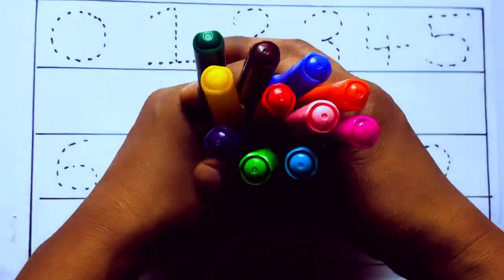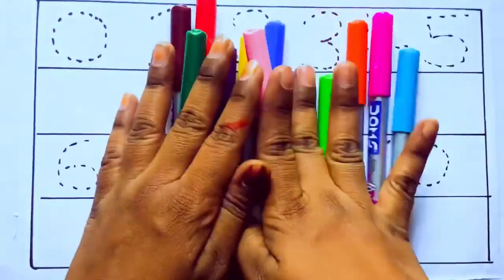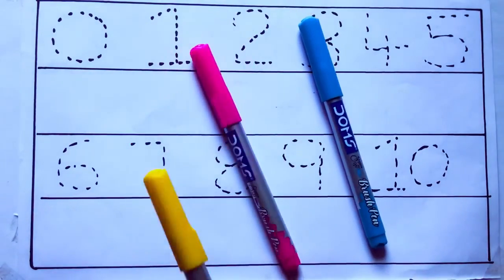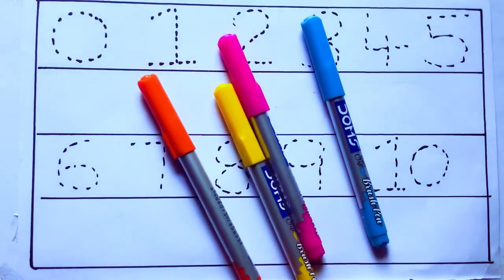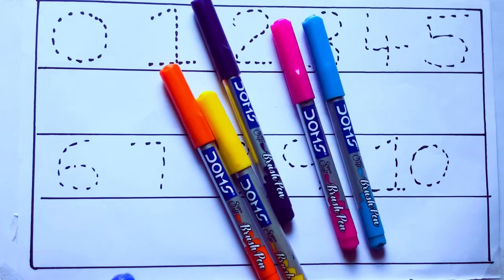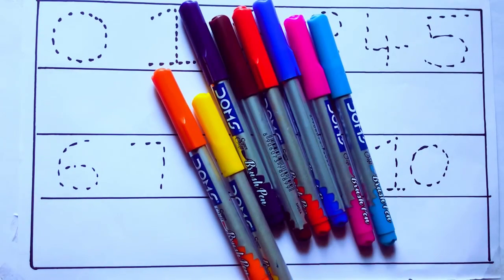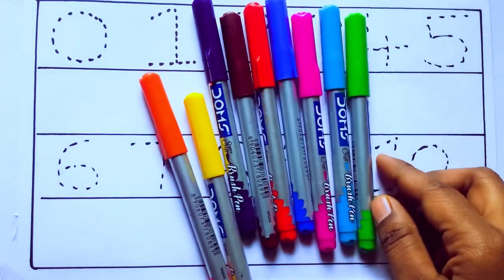Let's learn some colors. These are all the color pencils. Let's learn the names. Sky blue color, pink color, yellow color, orange color, violet color, blue color, brown color, red color, green color.